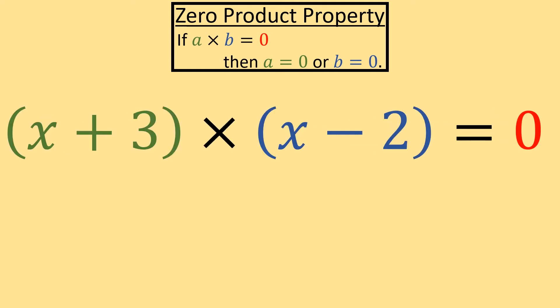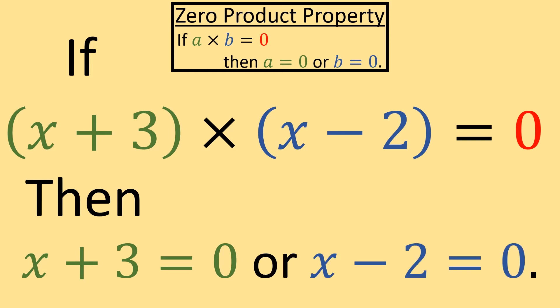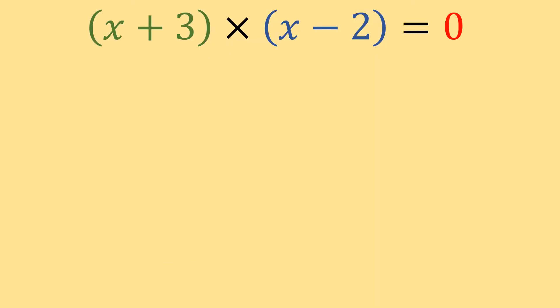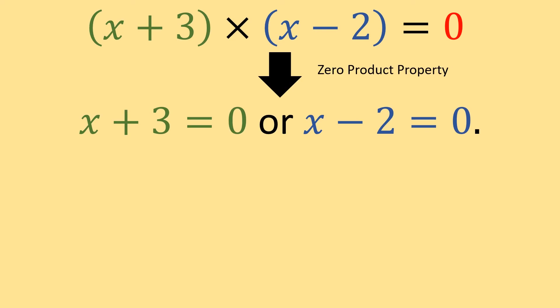Here we can treat the x plus three as a, and the x minus two as b, and we can rewrite this as if x plus three times x minus two equals zero, then x plus three equals zero, or x minus two equals zero. And we reach this conclusion because of the zero product property.